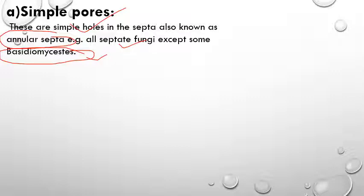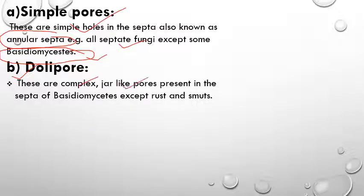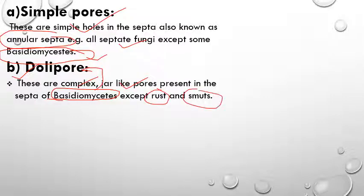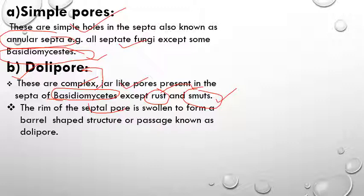Basidiomycetes is a class of fungi that includes mushroom-like fungi as well as other fungi — it is a large class. The second special type of pore is known as the dolipore. This is a complex, jar-like pore present in the septa of Basidiomycetes. It is characteristic of this group, except in rust and smut fungi, where the dolipore septum is absent. The rim of the septal pore is swollen with a barrel-shaped structure, and its function is the passage of material.